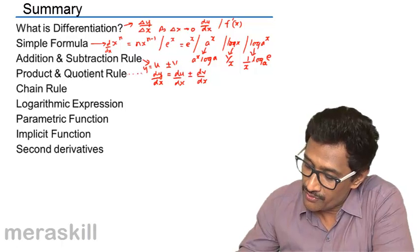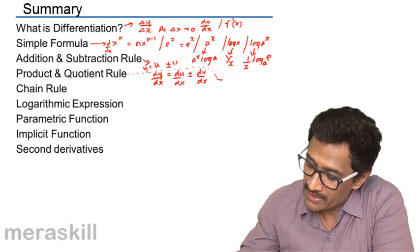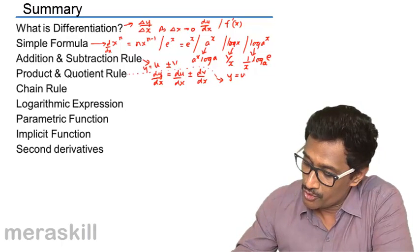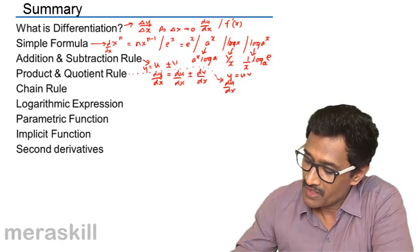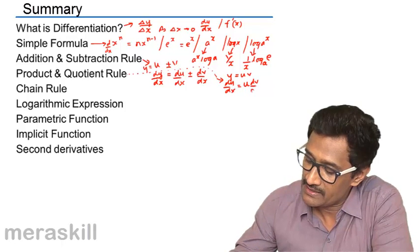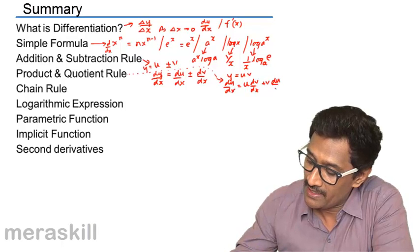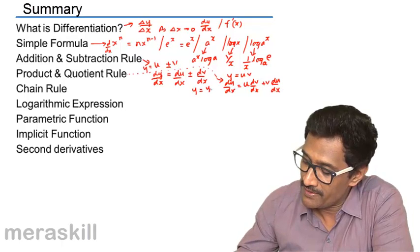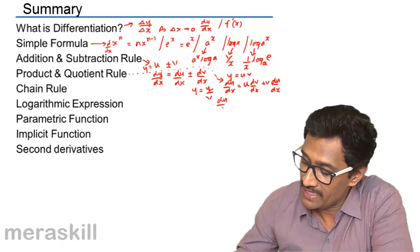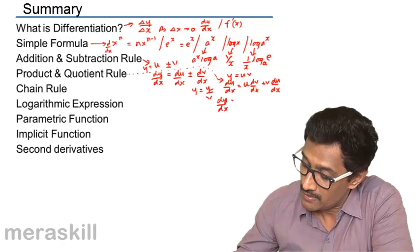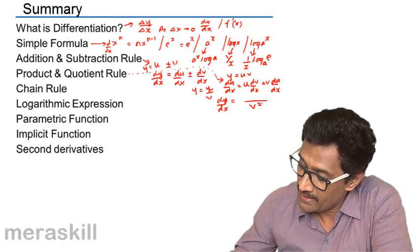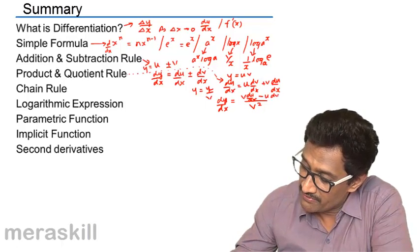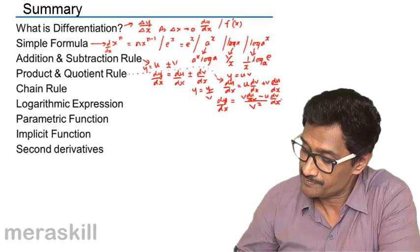Then, coming to chain rule, we will learn from previous, we will take it over here. Chain rule of product and quotient too. Suppose y is equal to uv. We said that dy by dx is nothing but u into dv by dx, plus v into du by dx. And suppose y is equal to u by v, then we said dy by dx is nothing but v squared, v du by dx minus u into dv by dx.